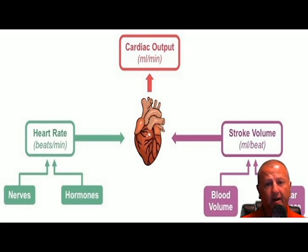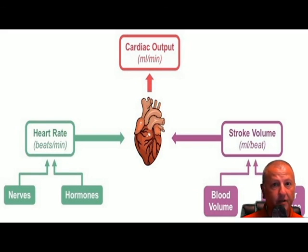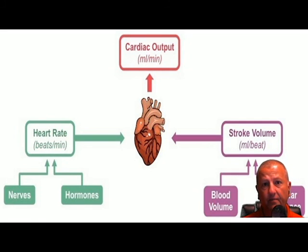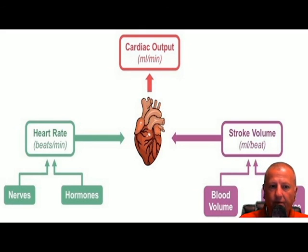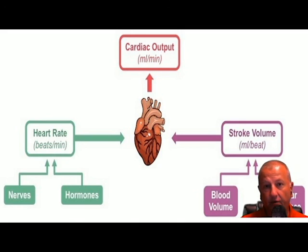Blood pressure is dependent upon blood volume and heart rate. If the heart rate is too fast, that's not going to help — the ventricles can't fill. If it gets too slow, we can't get enough blood out. You have to understand this physiology because that's what's going on with that guy laying in the street with a bullet hole.